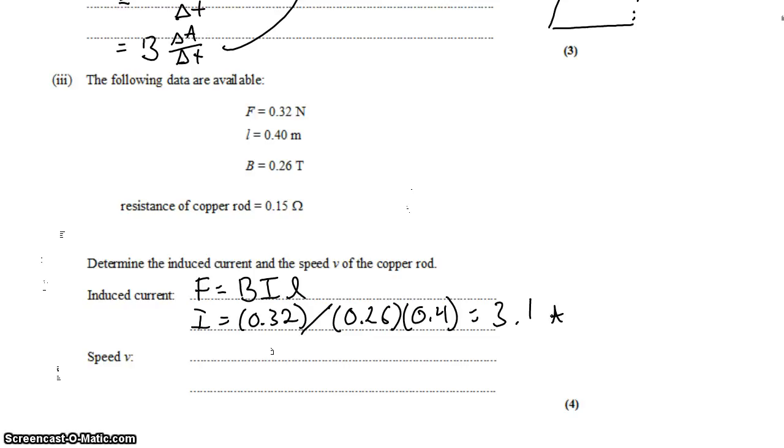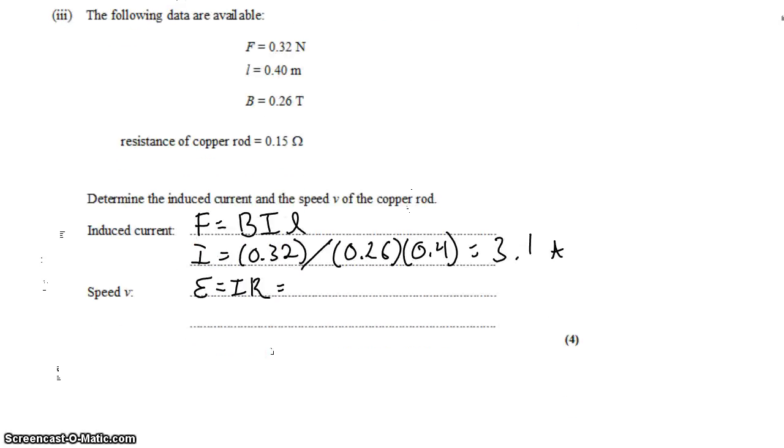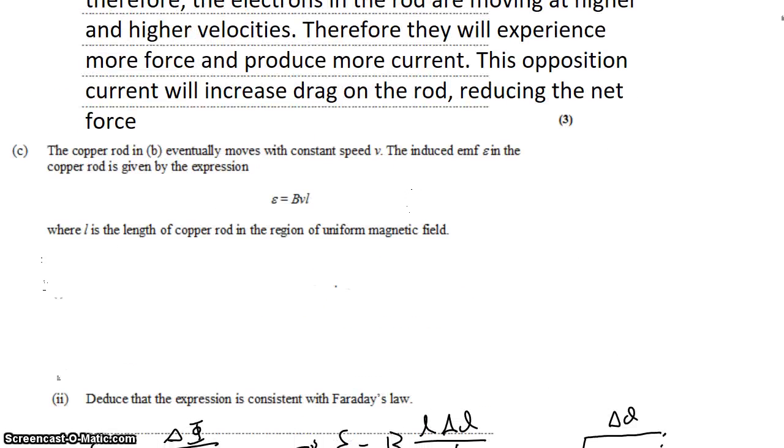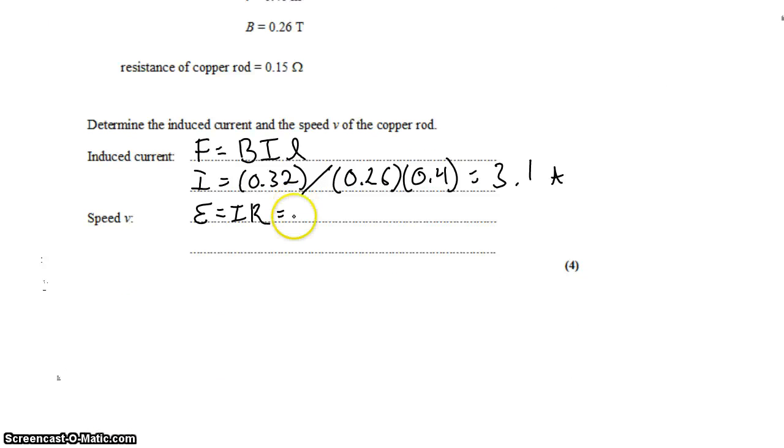And then we want the speed of the rod, which we can get from Ohm's law, E equals IR. But that EMF that's producing that circuit, producing that current, comes from the expression that we just derived, BVL. And that's the velocity that we want. So the velocity is IR on BL.